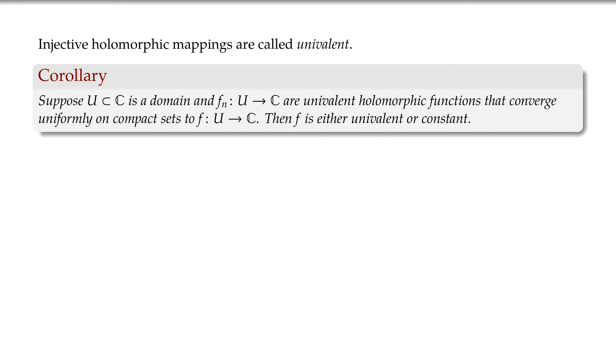So this is an application of Hurwitz's theorem to sequences of univalent functions. So suppose that we have a domain, and connected, it's important here, and a sequence of univalent holomorphic functions that converges uniformly on compact sets to some f. Then f is either univalent or constant. So it could be constant. But if it's not constant, it's univalent. So for example, if I have a sequence of automorphisms of a domain, then the limit is either an automorphism or it's constant. But it cannot be, let's say, 2 to 1.